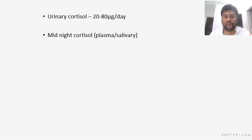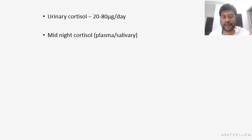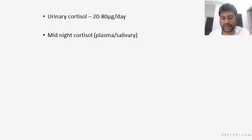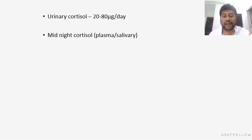The second option is going for midnight cortisol level, either in plasma or in saliva. Cortisol levels usually show diurnal variation — they are maximum during early morning and least during midnight. When measured at midnight, it will usually be less than 5 micrograms per deciliter. But if it is more than that, then you can confirm the diagnosis of adrenal hyperactivity or Cushing's syndrome.